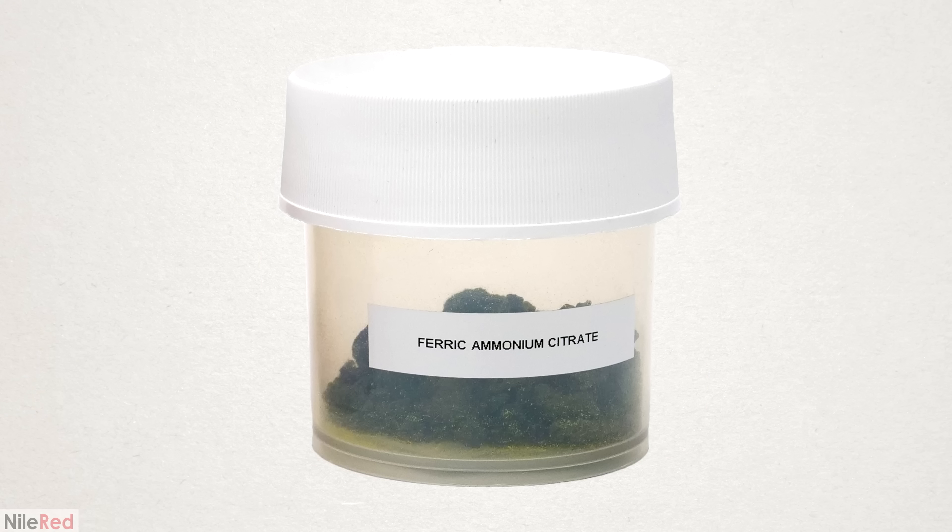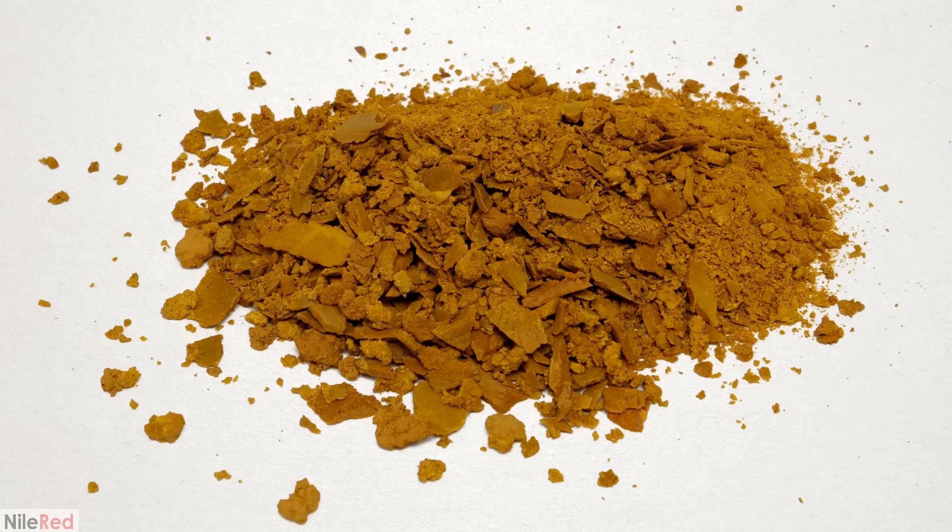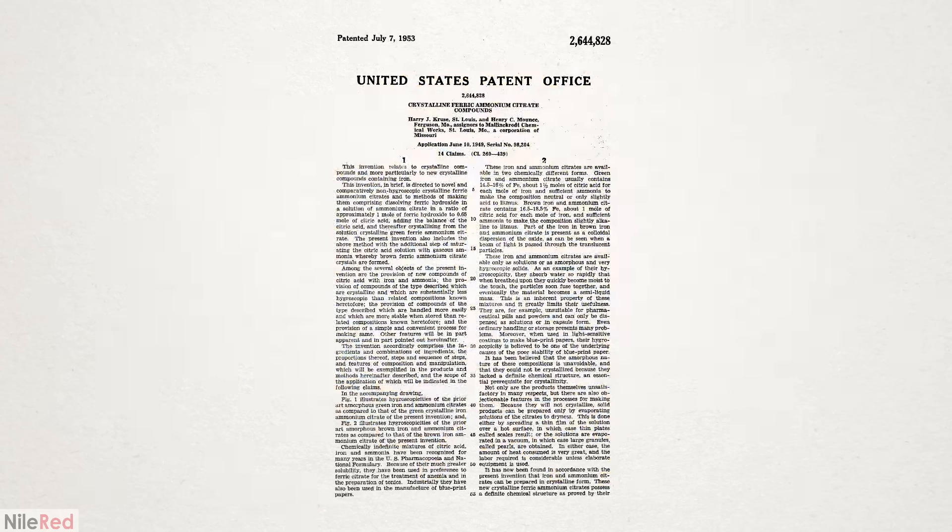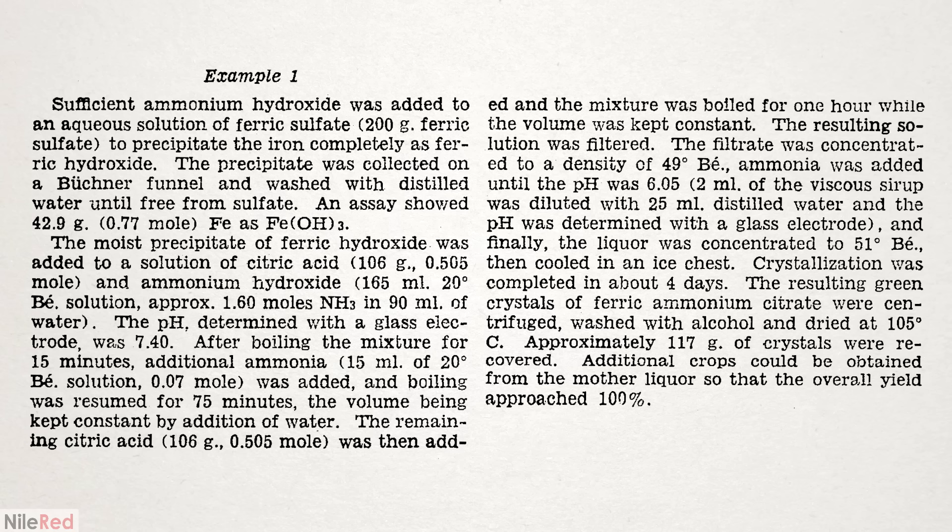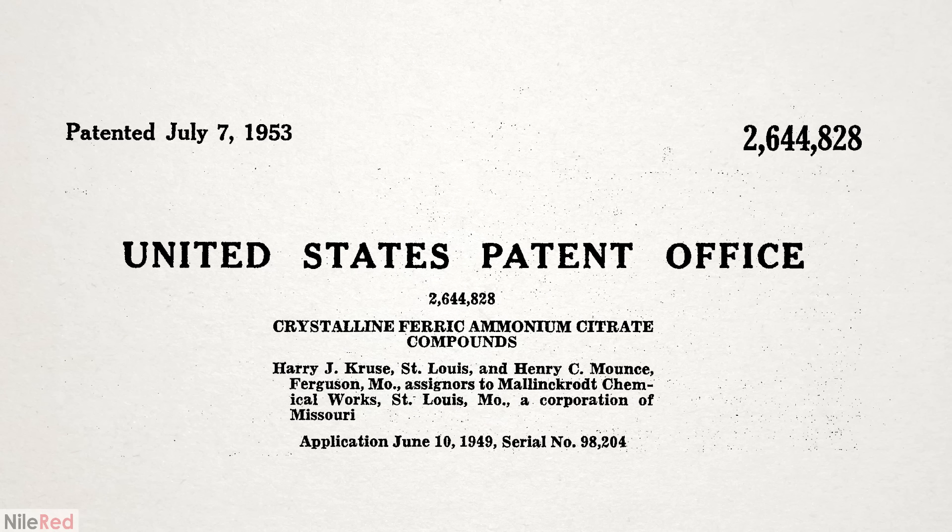As far as I know, there's no safe and reasonable way to make the ferricyanide, so I ended up just buying it from eBay. It was possible to make the ferric ammonium citrate though, starting from the ferric chloride that I made in the last video. It was honestly really hard to find a procedure for this and the only decent one I found was from the 1950s.